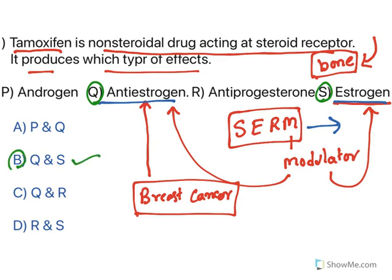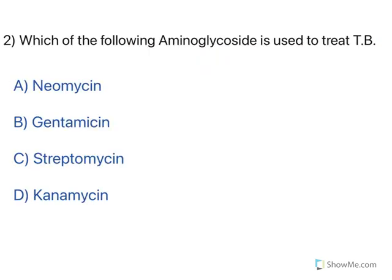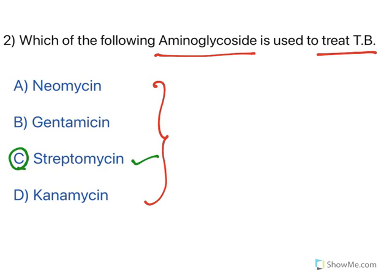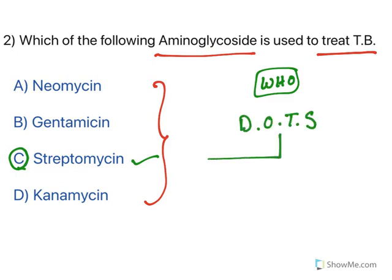Which of the following aminoglycosides is used to treat tuberculosis? Among all aminoglycosides, only streptomycin has proven efficacy to treat tuberculosis. The WHO program as well as India's DOTS — Directly Observed Treatment Short-course — both include streptomycin as one of the drugs to treat tuberculosis. So among all aminoglycosides, only streptomycin is used to treat tuberculosis.